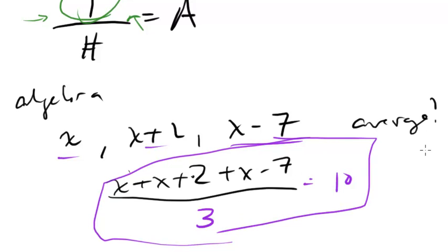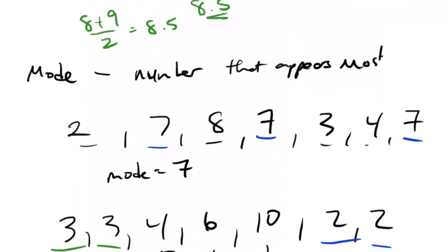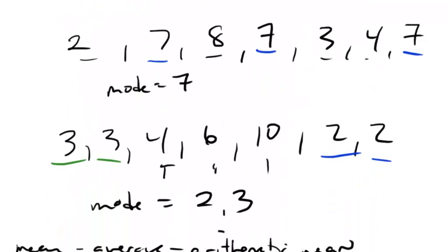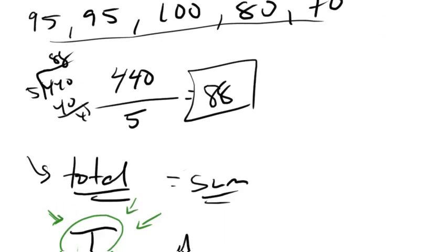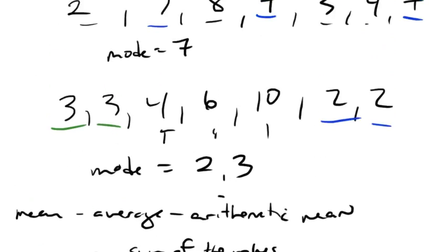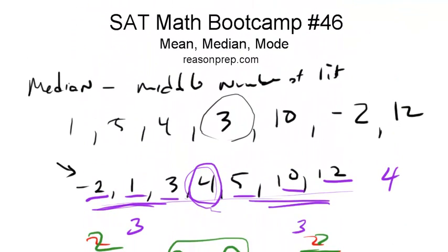That's pretty much it for averages. These questions are generally not that bad, especially the median and mode questions. It's really just about making sure you keep track of your numbers and don't make any silly mistakes, because that's generally what the SAT is trying to get you to do. If we can avoid that, we'll get all of these right.